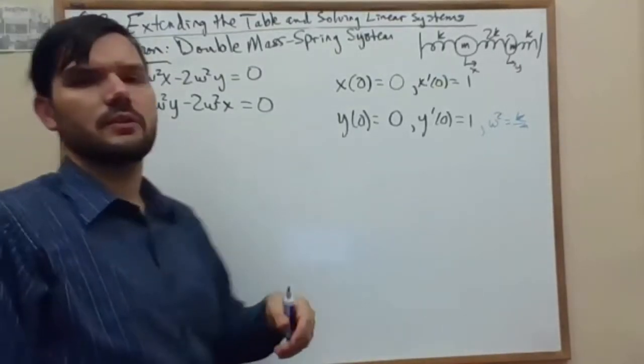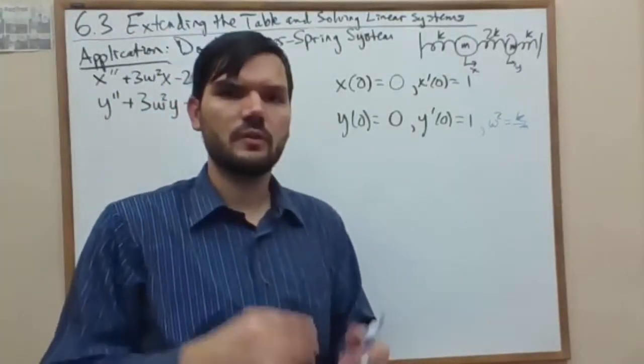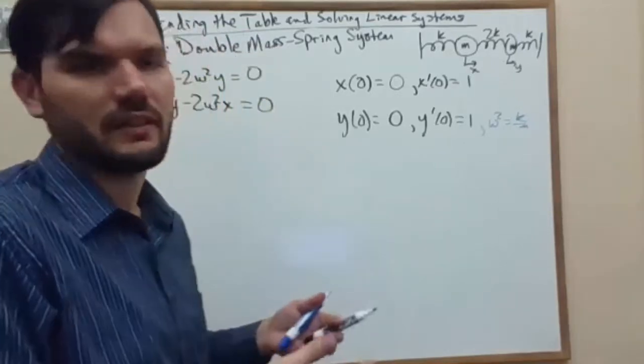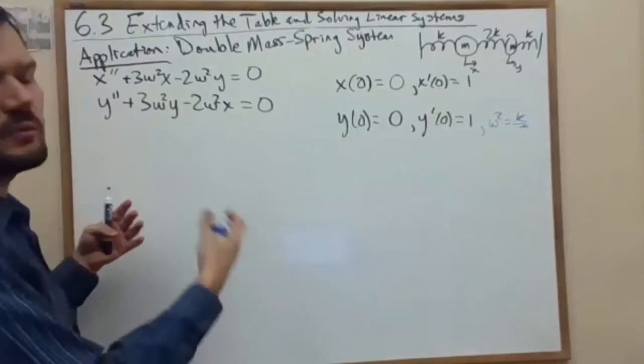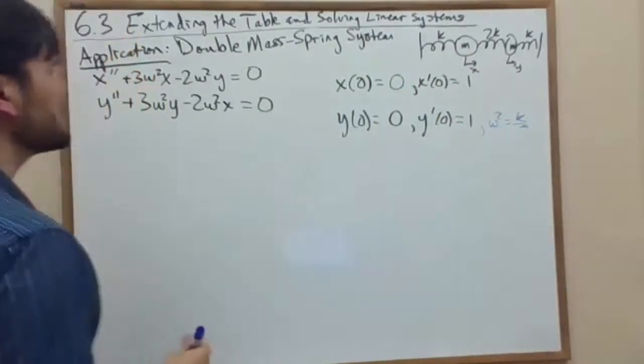Okay, so now we're going to transform both sides of the equations, or just the left-hand side because the right-hand side stays at 0. And as I transform I'm going to move the initial conditions onto that right-hand side, the known pieces.